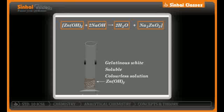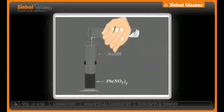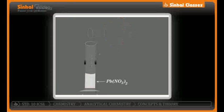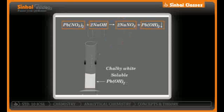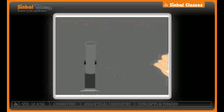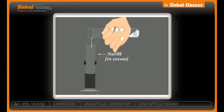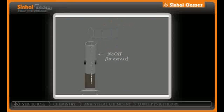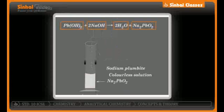Similarly, another soluble salt is lead nitrate, Pb(NO3)2. Treated with excess NaOH, it gives NaNO3 plus Pb(OH)2 — a precipitate indicated by a downward arrow, which gives a chalky white precipitate. This precipitate, when treated with excess NaOH, gives sodium plumbite, Na2PbO2, along with water — again soluble in excess NaOH, giving a colorless solution.